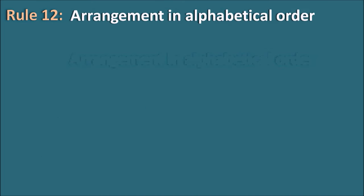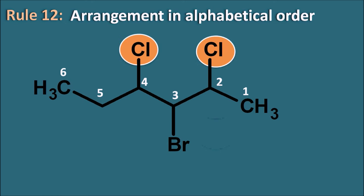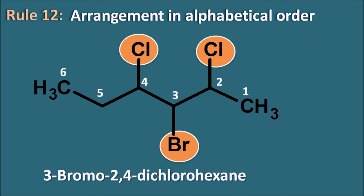Rule 12: arrangement in alphabetical order. Example: a 6-carbon chain with chloro, chloro, and bromo substituents. When arranging the name, substituents are listed alphabetically: bromine comes before chlorine, so we write 3-bromo-2,4-dichlorohexane. The names of all side chains should be arranged in alphabetical order.